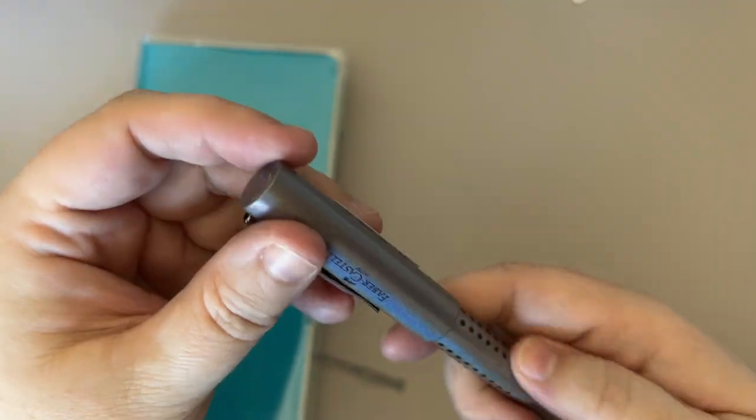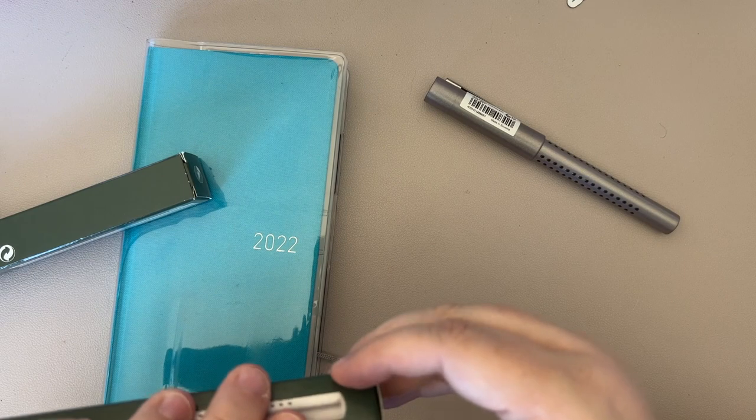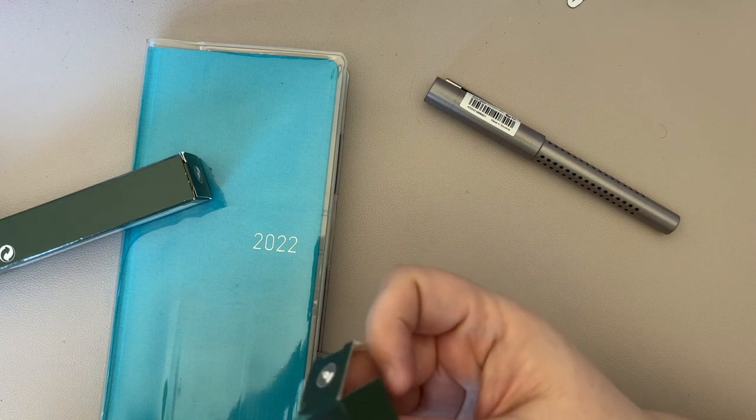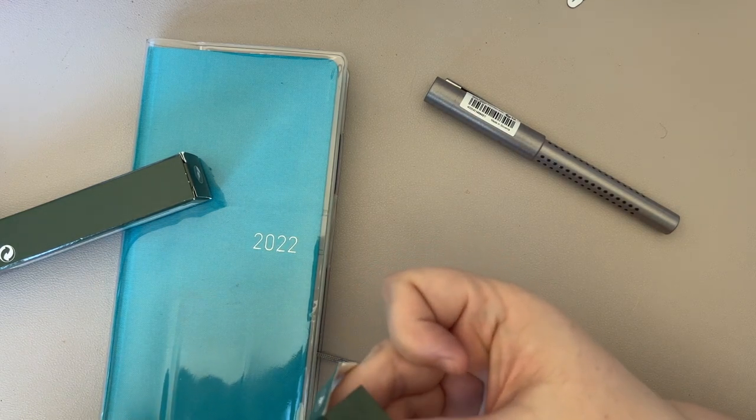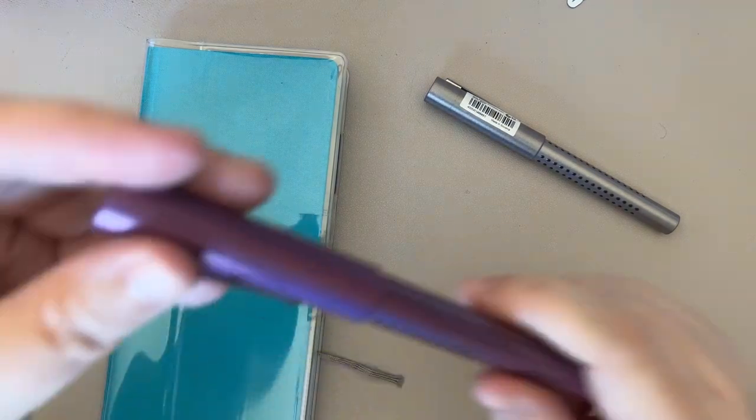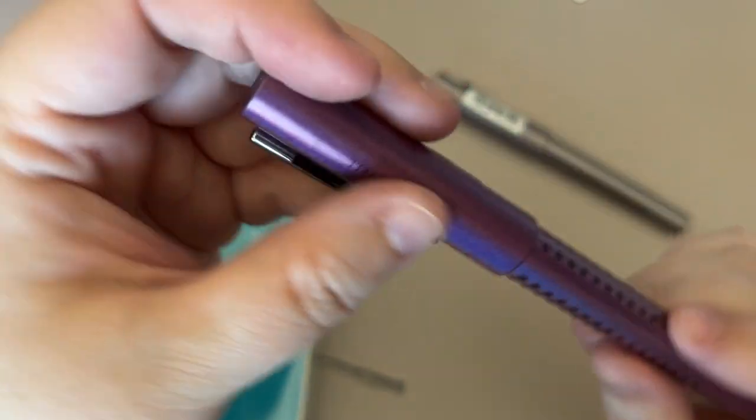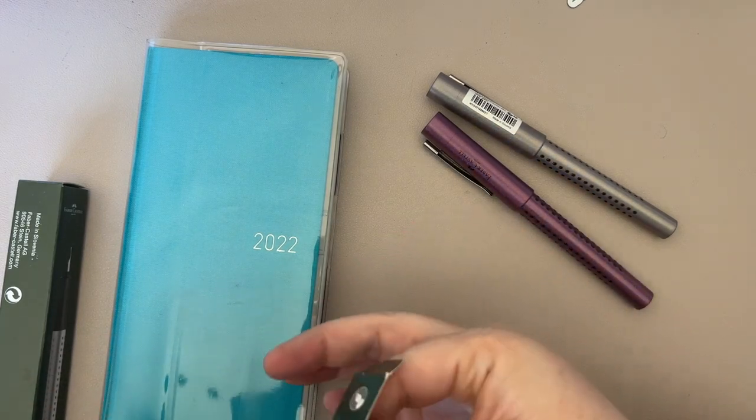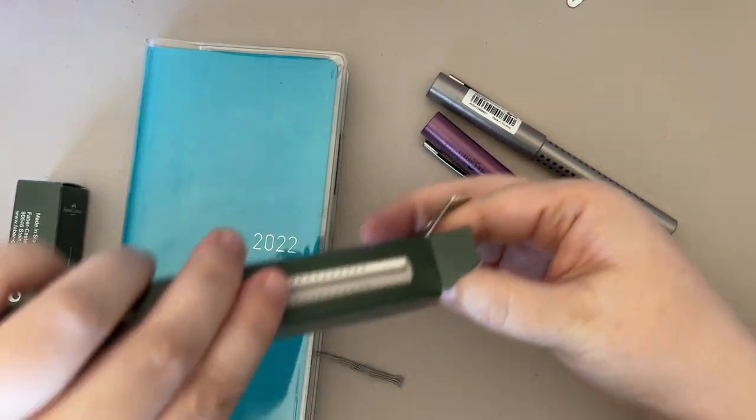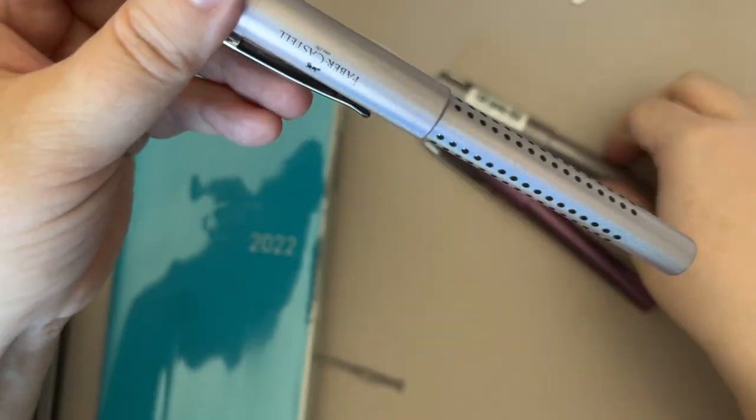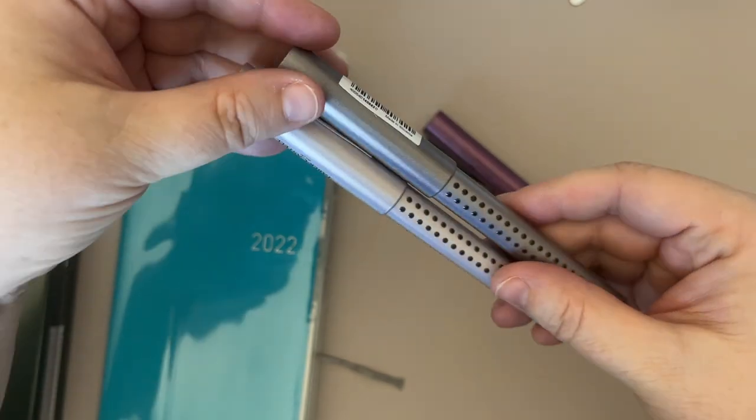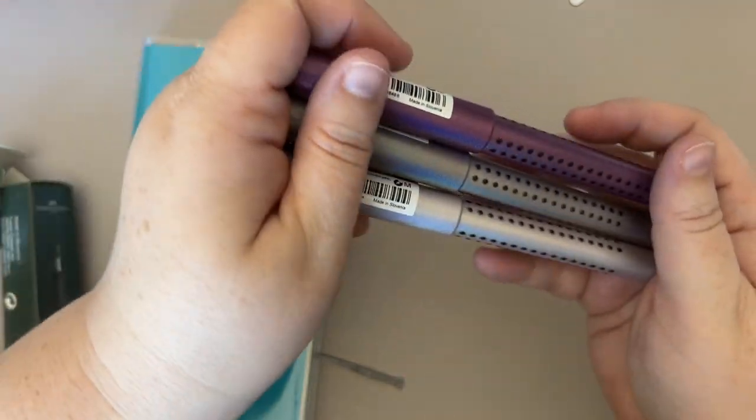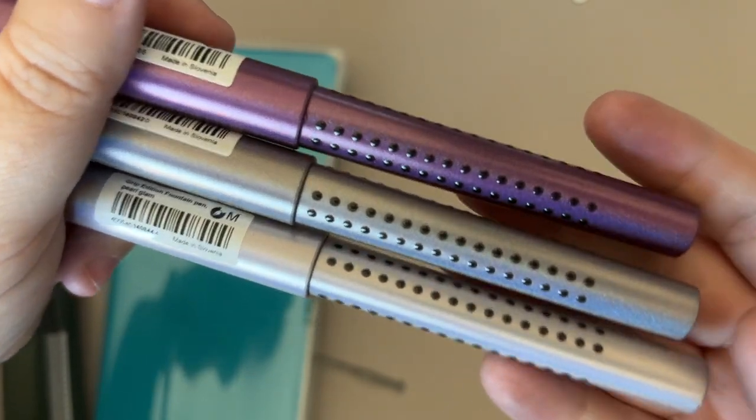This is the silver one. The only other Faber-Castell pen that I have is the Hexo. And I really like that pen. This is like an entry-level pen. I like this finish. And then this is the pearl. The pearl and the silver. So silver's a little darker. And then this purple one. This purple one looked a lot lighter and shinier in the pictures. But here are the different colors.